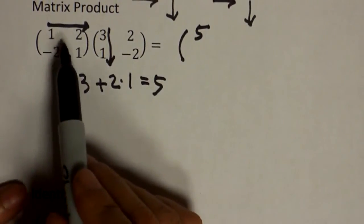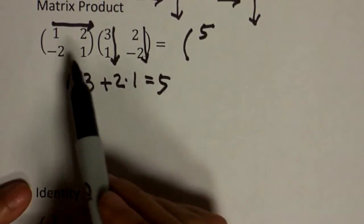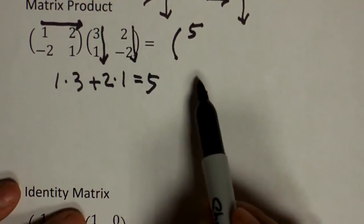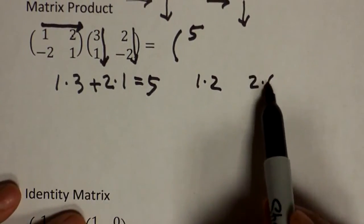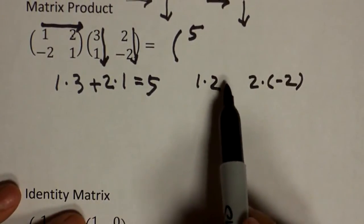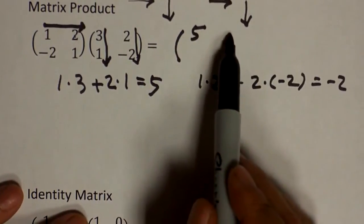Now, let's think about the next column. So you do first row and second column. One times two. Two times negative two. And then you add them together, which is negative two. So you're going to put a negative two here.